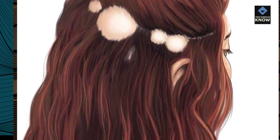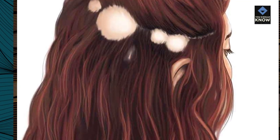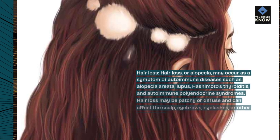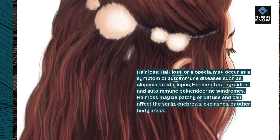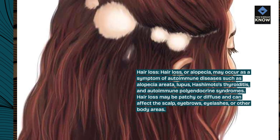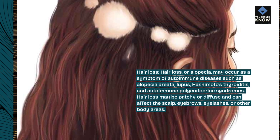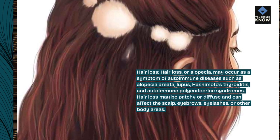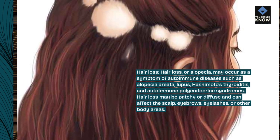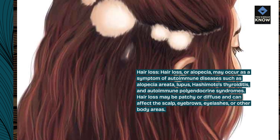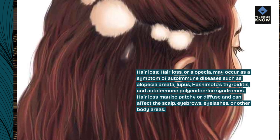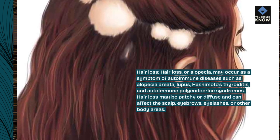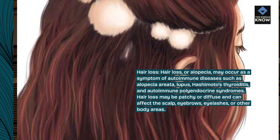Hair loss: hair loss, or alopecia, may occur as a symptom of autoimmune diseases such as alopecia areata, lupus, Hashimoto's thyroiditis, and autoimmune polyendocrine syndromes. Hair loss may be patchy or diffuse and can affect the scalp, eyebrows, eyelashes, or other body areas.